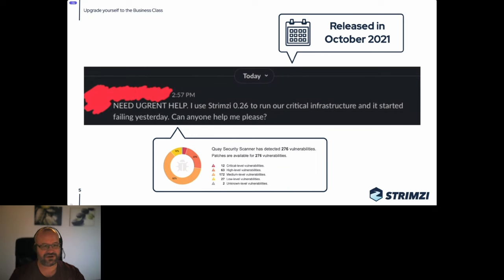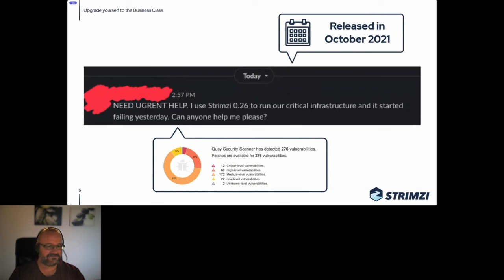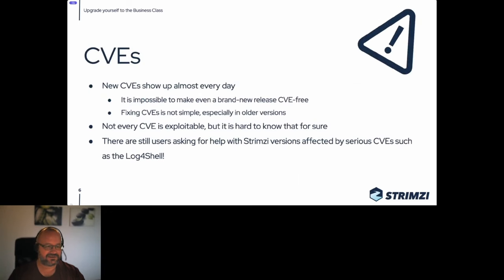One motivation for this talk is questions we sometimes get on Strimzi channels, like: 'Need urgent help — I use Strimzi 0.26 to run our critical infrastructure and it started failing yesterday.' Strimzi 0.26 is very old, released in October 2021. If you check the container image it has many security issues: 12 critical CVEs, 63 high-level CVEs, so it's probably not very secure.